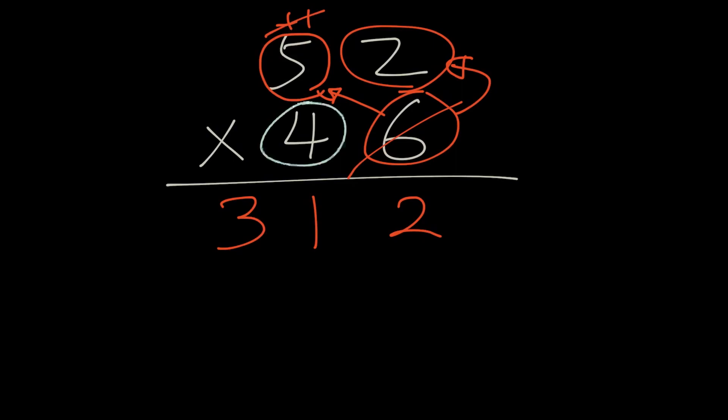And then we're going to look at the 4. Bring the 0 down. 4 times 2 is 8. 4 times 5 is 20.